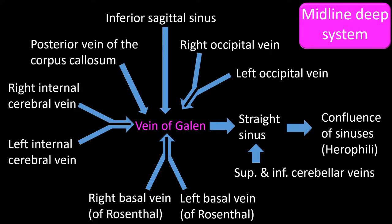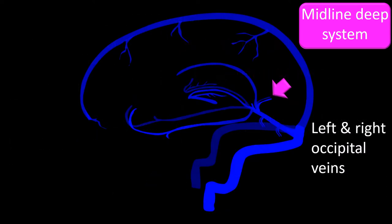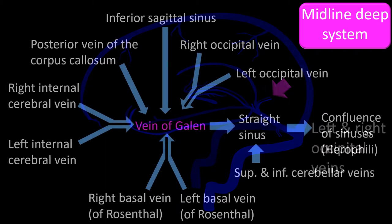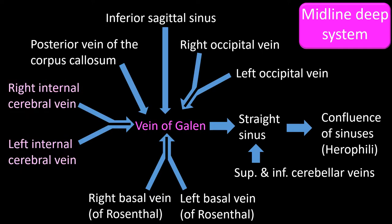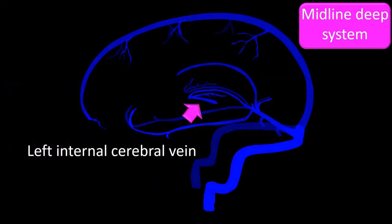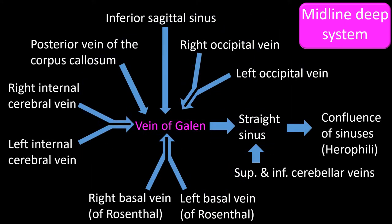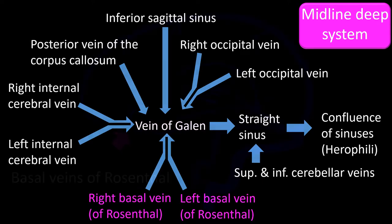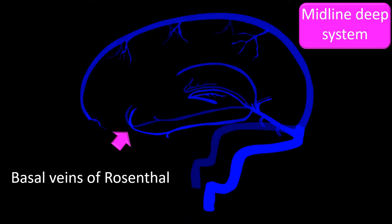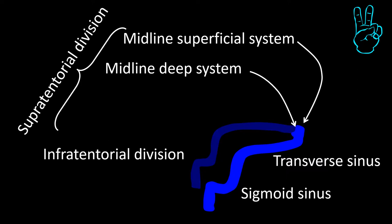The vein of Galen also receives blood from the right and left occipital veins, and from the right and left internal cerebral veins. The vein of Galen also collects blood from the basal vein of Rosenthal. We have been talking about the midline deep system.